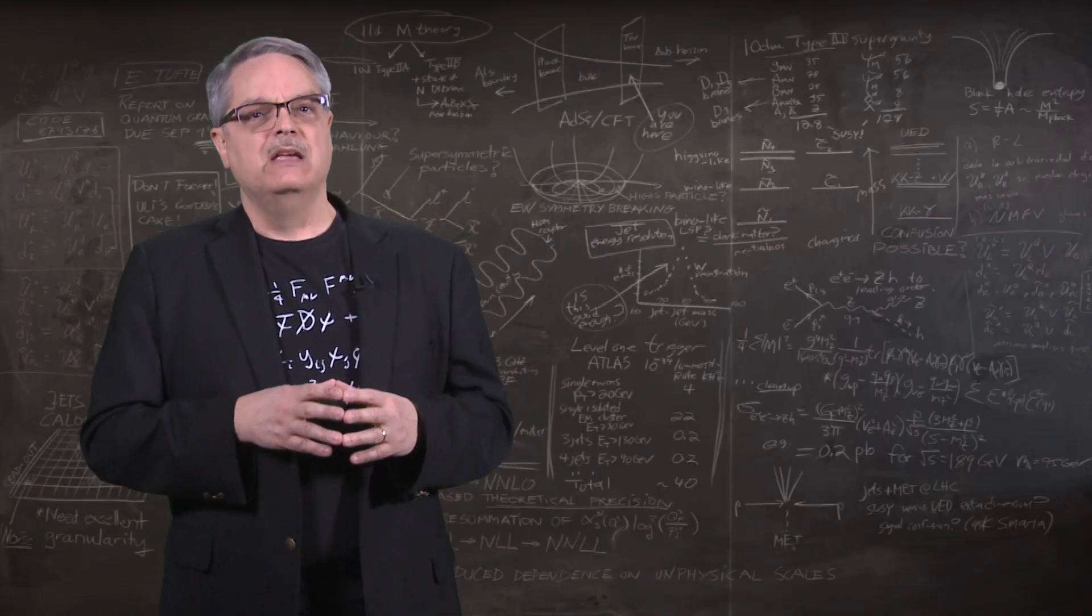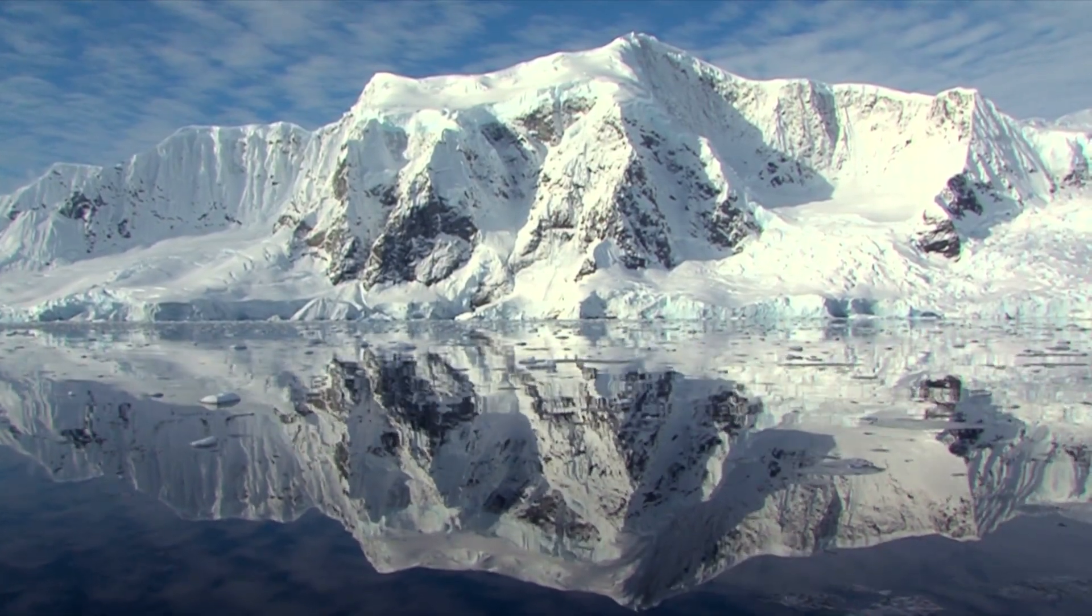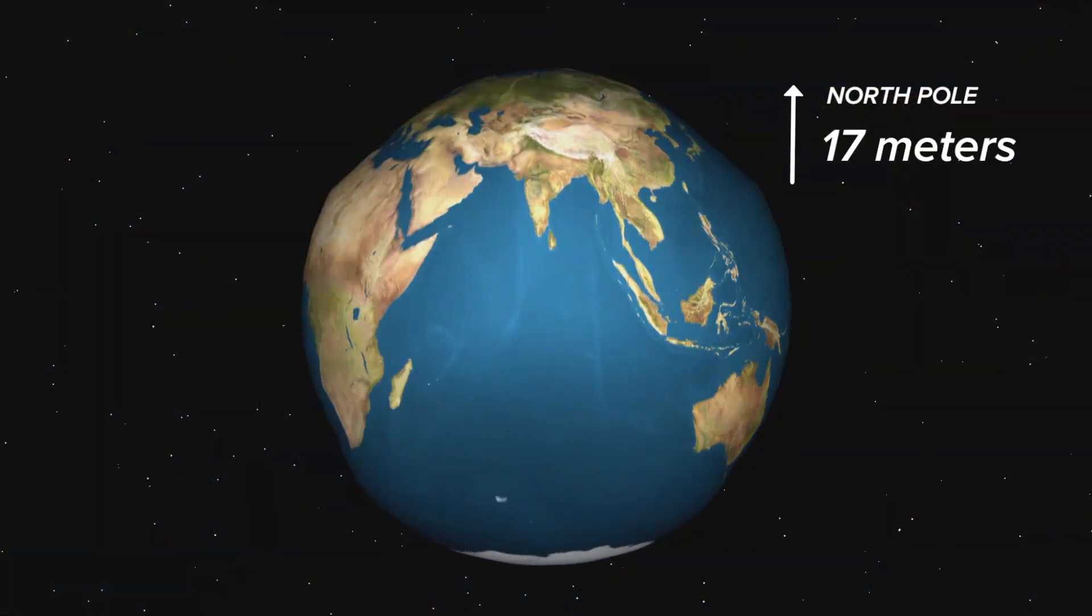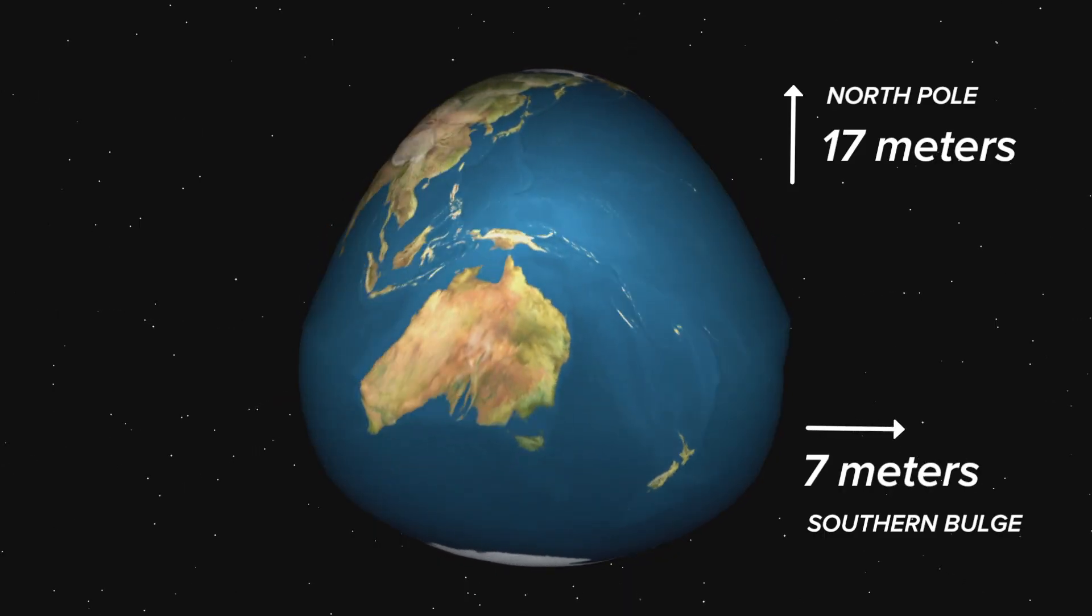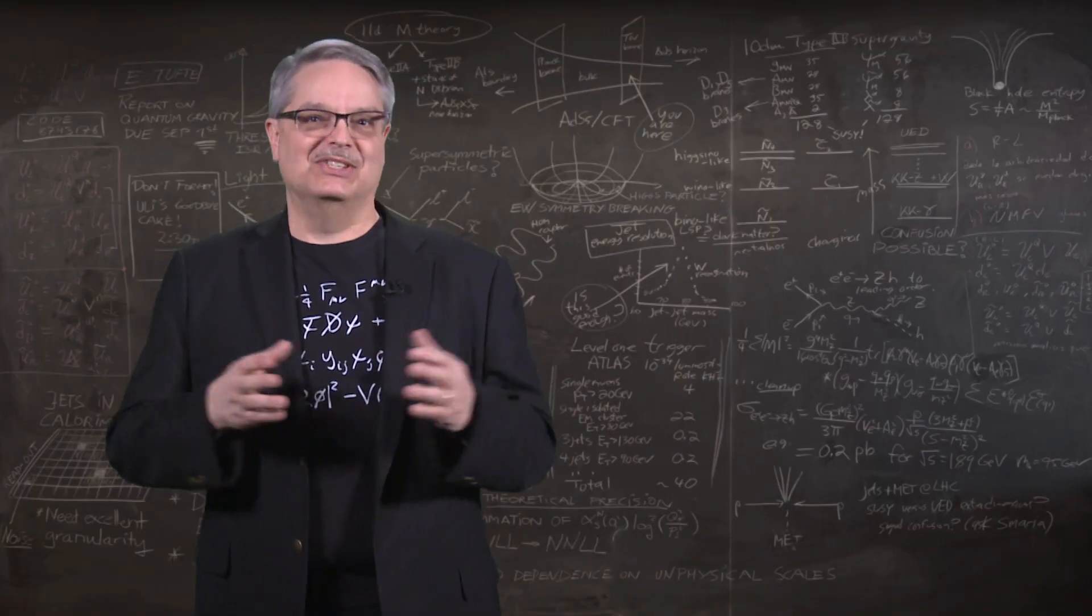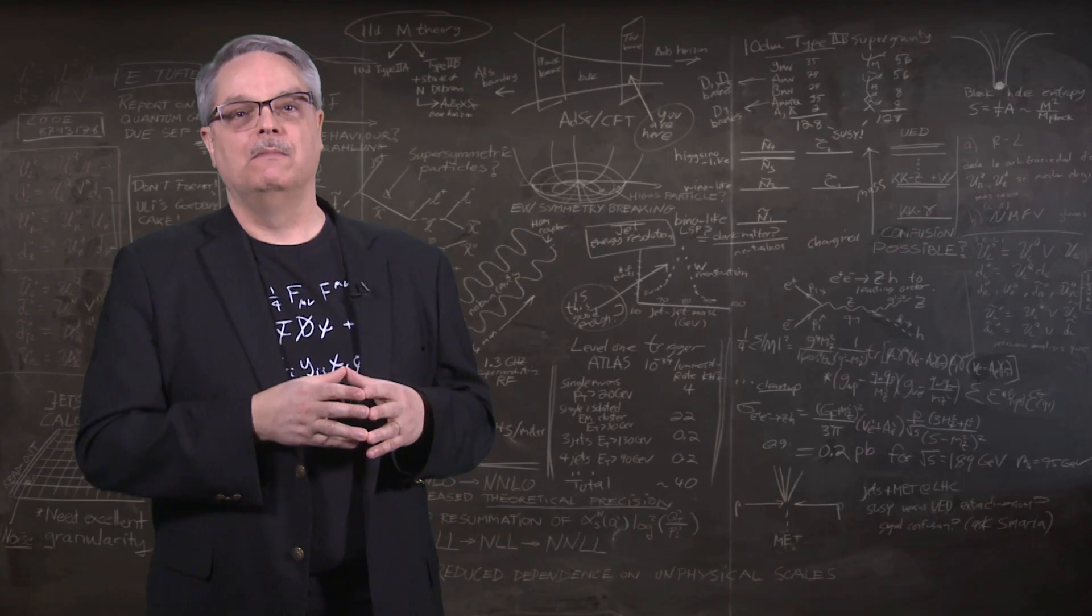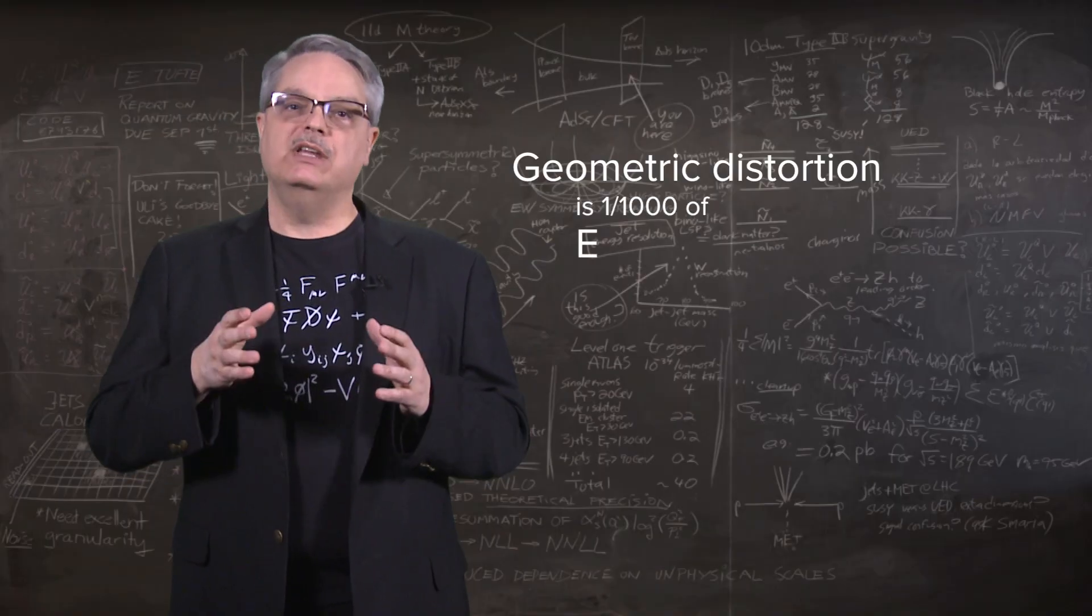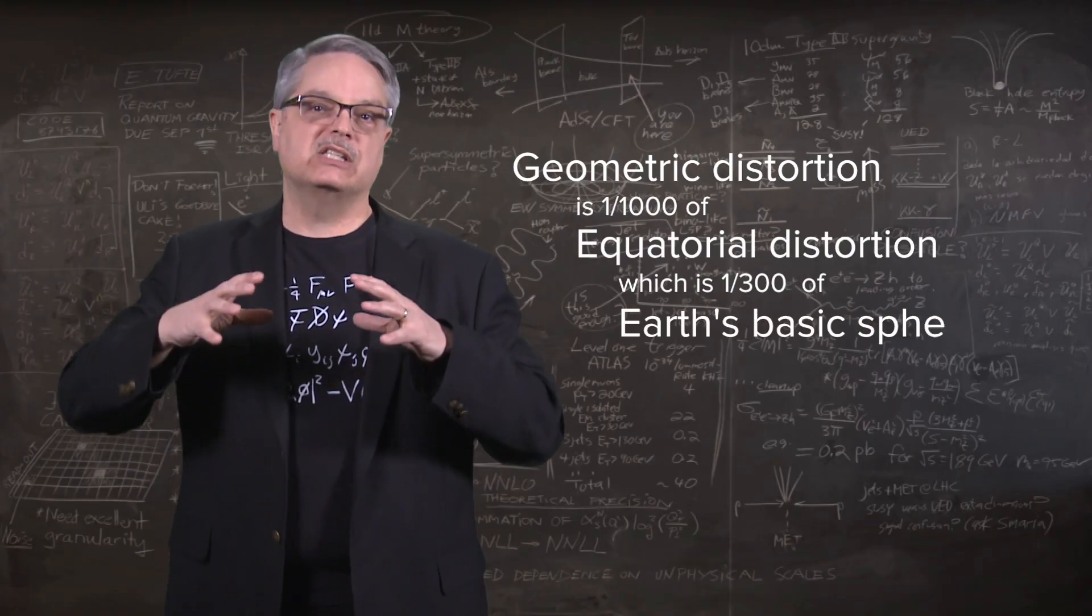And the story doesn't end there. If you need to know the shape of the Earth even more accurately, it turns out that the Antarctic ice sheet squishes the bottom of the Earth. This and a few other effects causes the North Pole to bulge upward about 17 meters and makes a bulge of 7 meters in the mid-southern latitudes. This picture here exaggerates what's going on, but essentially the Earth is a bit pear-shaped. Well, that's okay. The planet is getting older and, well, it happens to the best of us. Notice that I said meters here when we were talking about kilometers before. The changes in the Earth's geometry that gives it a tiny pear-like shape are about one one-thousandth that of the equatorial bulge distortion, which was already a small 1 in 300 distortion on the basic spherical shape of the Earth.